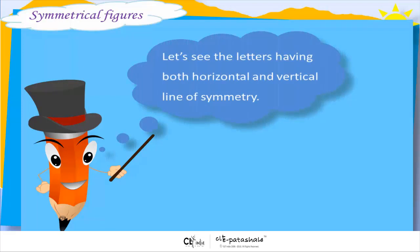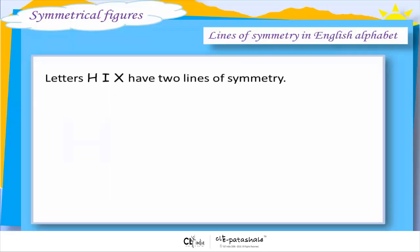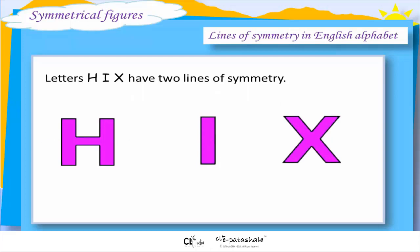Let us see the letters having both horizontal and vertical line of symmetry. Letters H, I, X have two lines of symmetry.